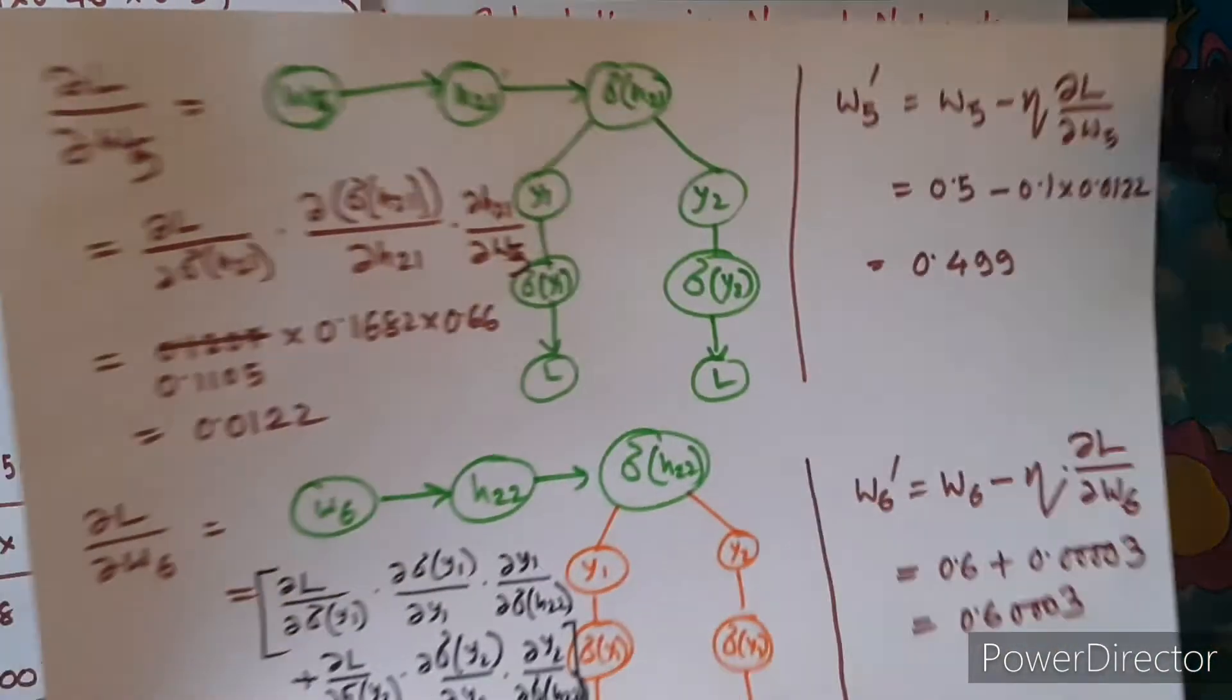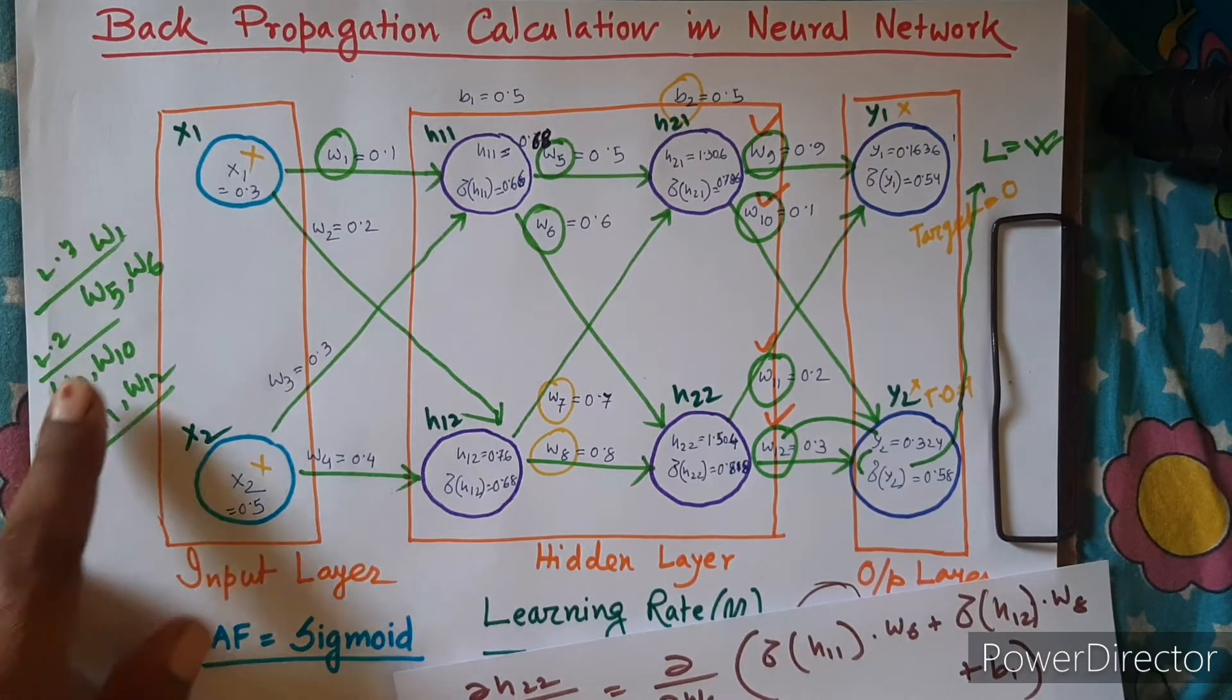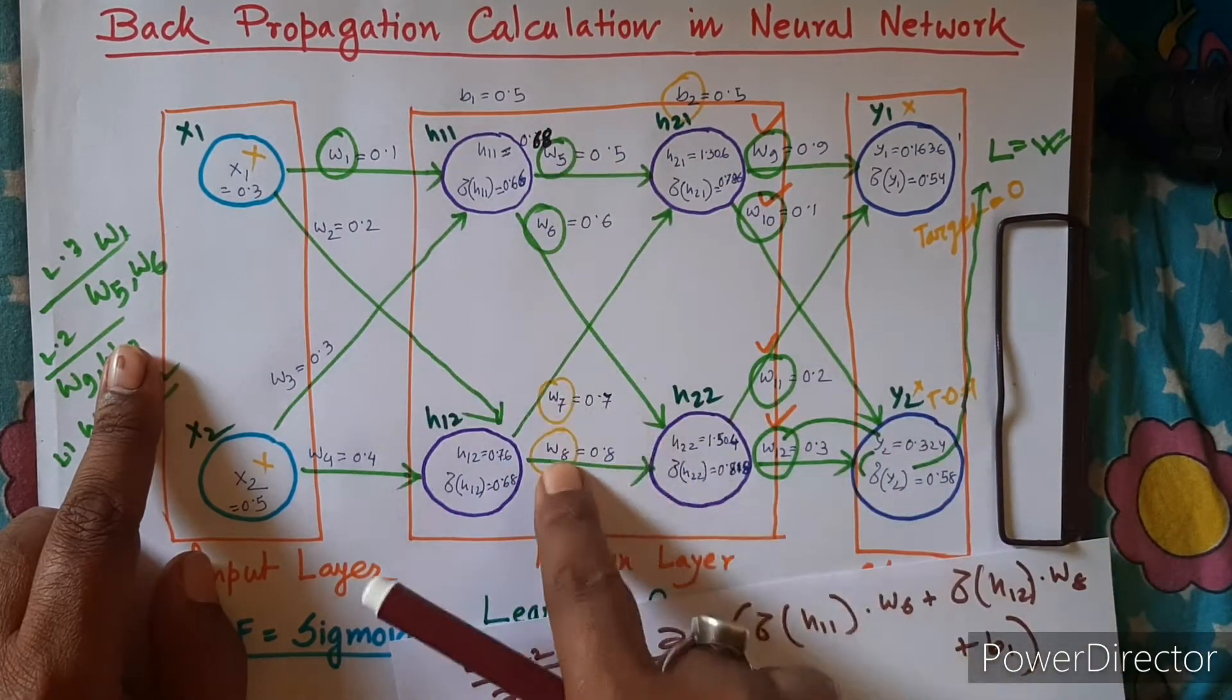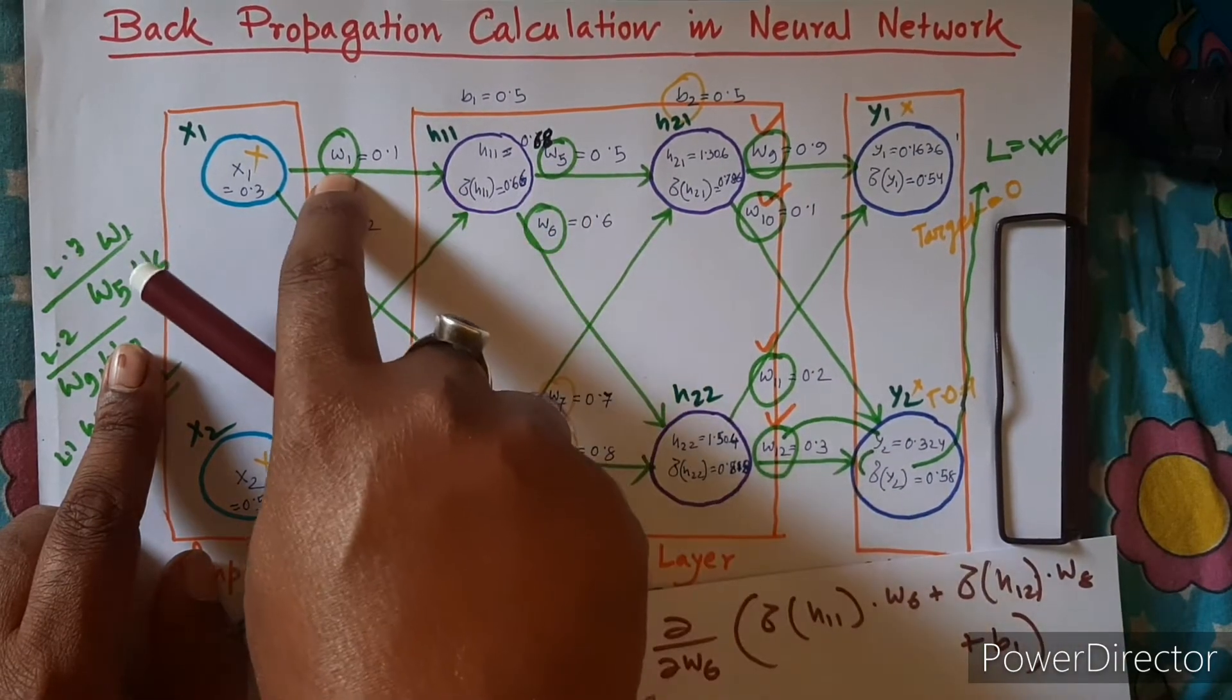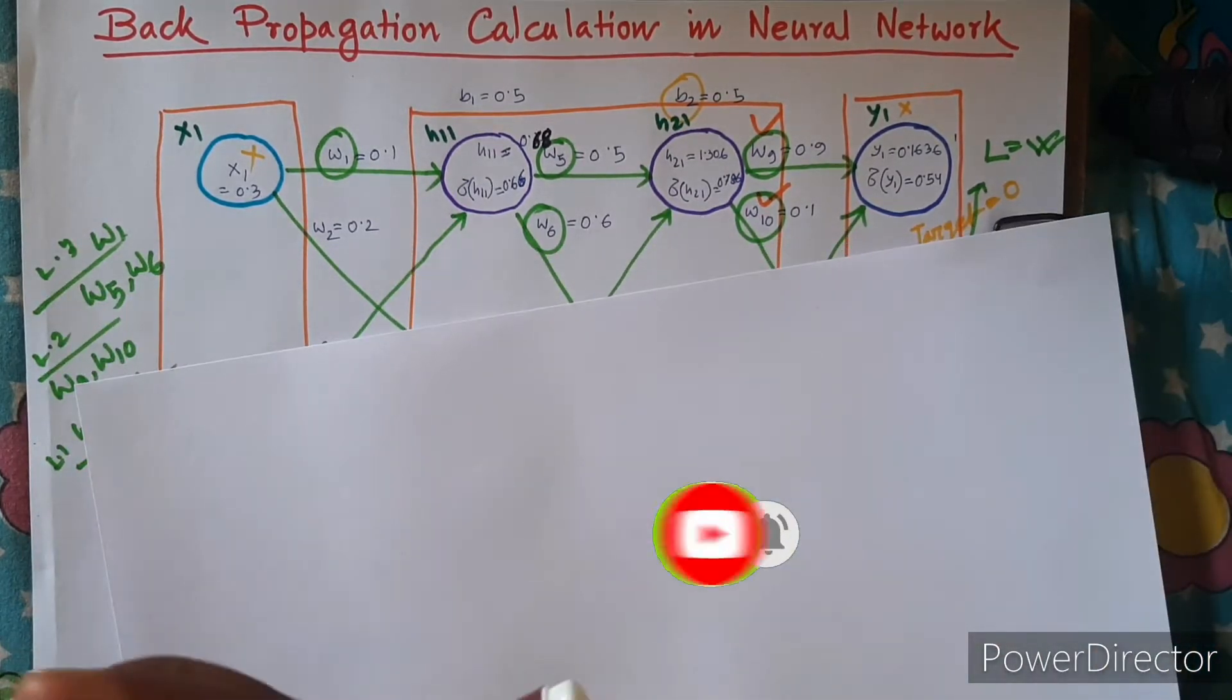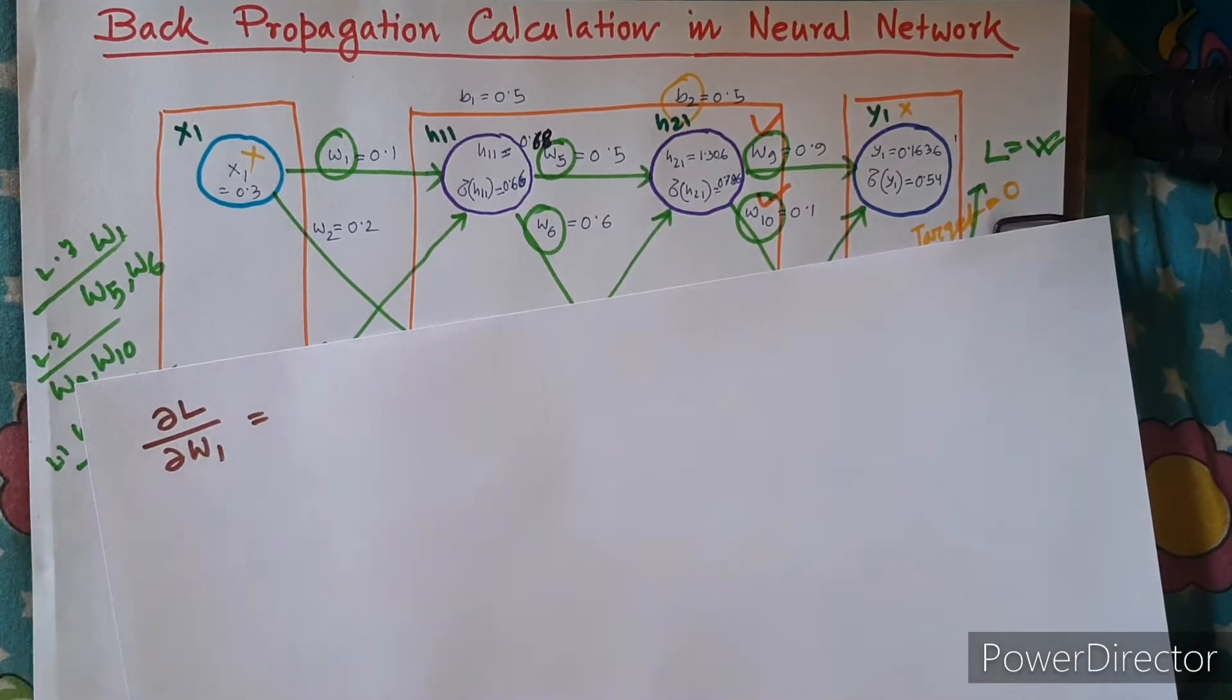Now let's calculate for the next layer. We have completed this layer as well, so hidden layer one weights are also calculated - w5 and w6. Now we calculate for w1. If we go for error with respect to w1...